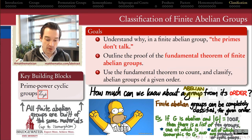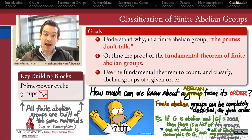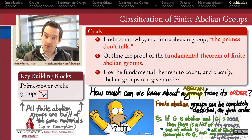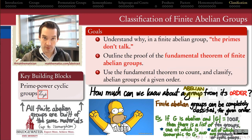In other words, subgroups whose order is a power of a prime — if I have two different subgroups and those primes are distinct, then those subgroups cannot overlap at all except at the identity. The primes don't talk theorem is the key ingredient to understanding why the fundamental theorem is true. In this video, let's get a view on what the primes don't talk theorem means and how we might be able to prove it.